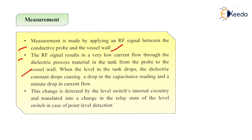When the level in the tank drops, the dielectric constant drops, causing a drop in the capacitance reading and a minute drop in current flow. This change is detected by the level switch internal circuitry and translated into a change in the relay state of the liquid level switch to the point of level detection.